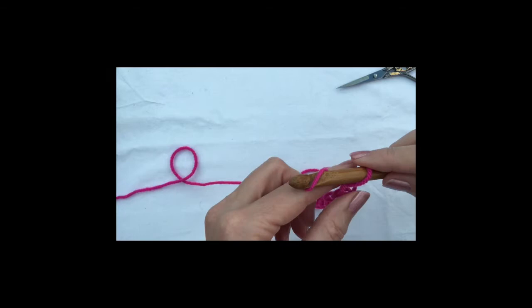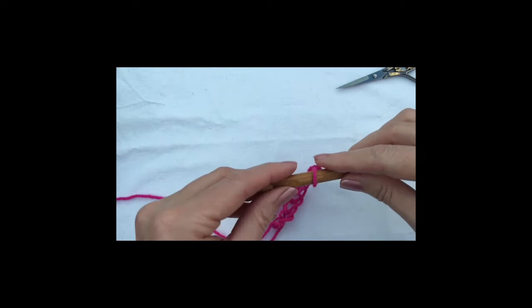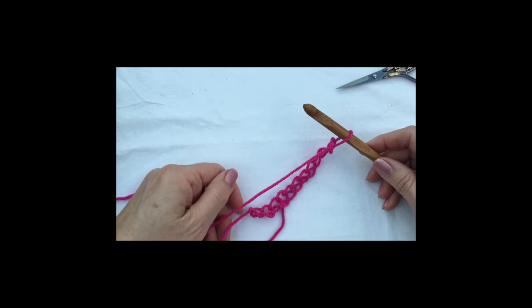You're creating a long line of chains and these chains are really big because I'm using a 9mm hook. And that's your chain and in the next one we'll start double crochet.